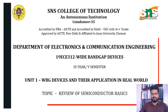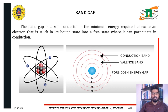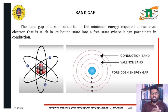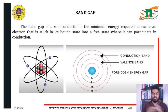The band gap of a semiconductor is the minimum energy required to excite an electron that is stuck in its bound state into a free state where it can participate in conduction. The atom has a conduction band and a valence band, and the gap between them is called the forbidden energy gap. As you can see in this image, the forbidden energy gap between the conduction band and valence band is clearly indicated.